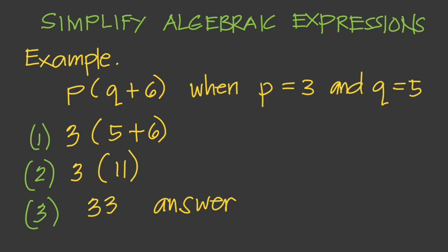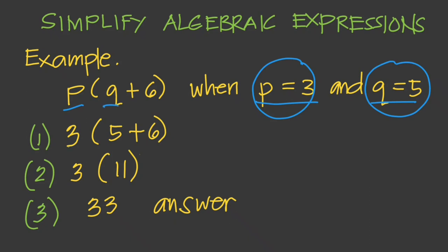For example, we're given P times the quantity Q plus 6. What is the value when P equals 3 and Q equals 5? We substitute P with 3 and Q with 5, giving us 3 times (5 plus 6). Following the order of operations, we solve inside the parenthesis first: 5 plus 6 equals 11. Then 3 times 11 gives us 33, which is our answer.